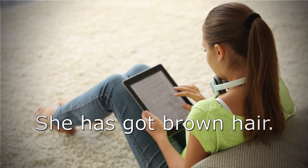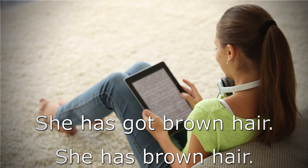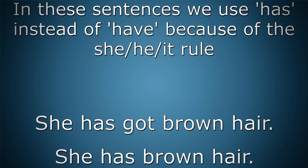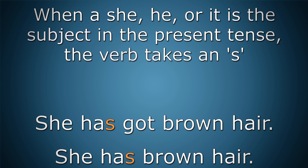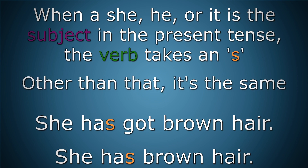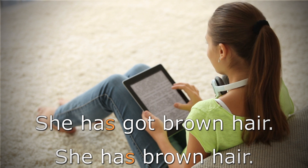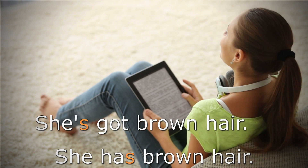She has got brown hair. She has brown hair. In these sentences we use has instead of have because of the she/he/it rule. When she, he, or it is the subject in the present tense the verb takes an S. Other than that it's the same. She has got brown hair is normally said as she's got brown hair.